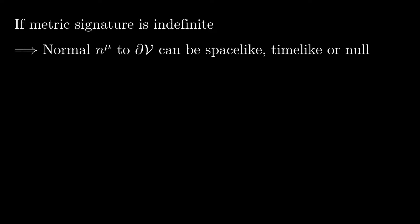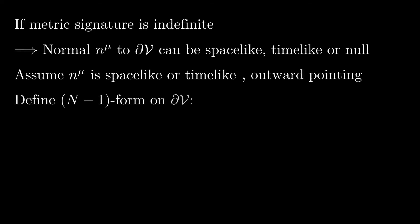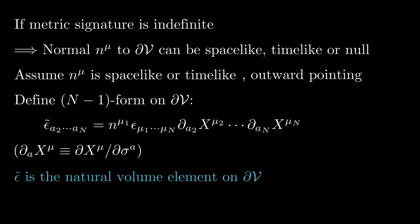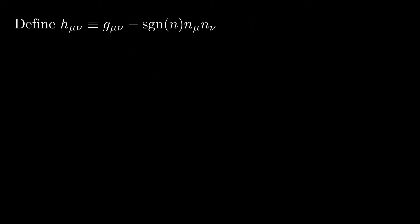Consider for now the case in which the boundary element is not null — that is, the normal to the boundary is either space-like or time-like. Let n-mu denote the outward-pointing unit normal to the boundary, and define an n-minus-1 form epsilon-tilde on the boundary by contracting the Levi-Civita tensor on the first index with the unit normal and on the remaining indices with factors of partial-a x-mu. I'll now show that epsilon-tilde is the natural volume element on the boundary, equaling square root of |h| times the wedge products of d-sigma-2 through d-sigma-n, where h is the determinant of the metric on the boundary.